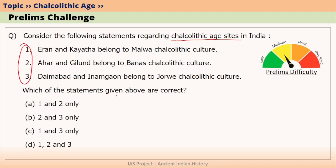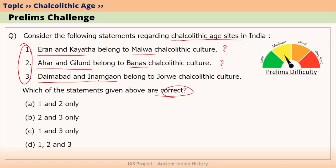Which of the statements given above are correct? The first statement is: Iram and Kayatha belong to Malwa Chalcolithic culture. The second statement is: Ahar and Gillund belong to Banas Chalcolithic culture. The third statement is: Daimabad and Inamgaon belong to Jorwae Chalcolithic culture. If you know the answer, please answer it in the comment section.